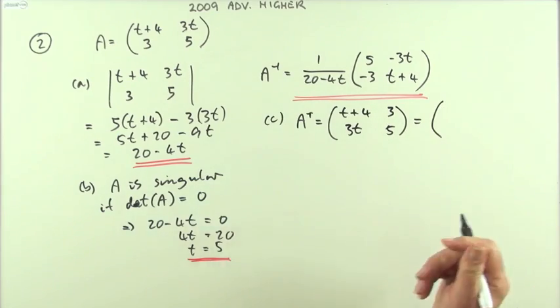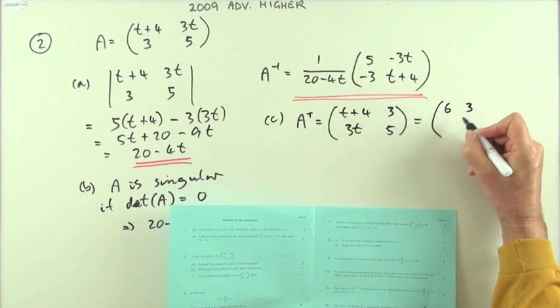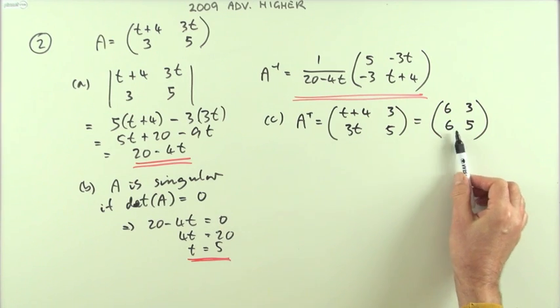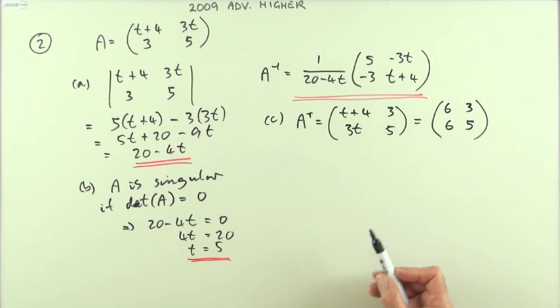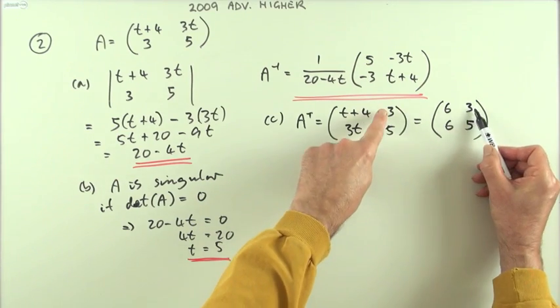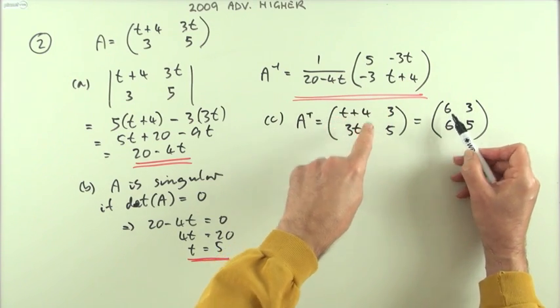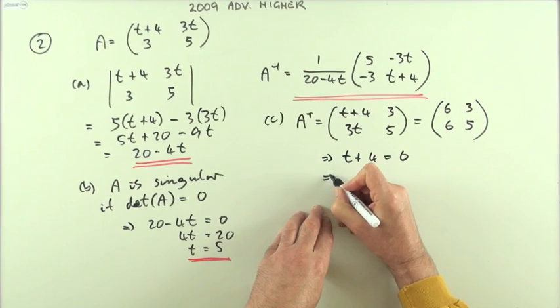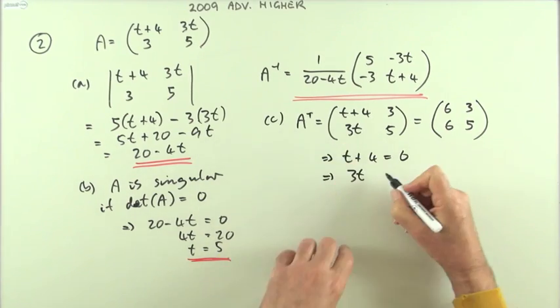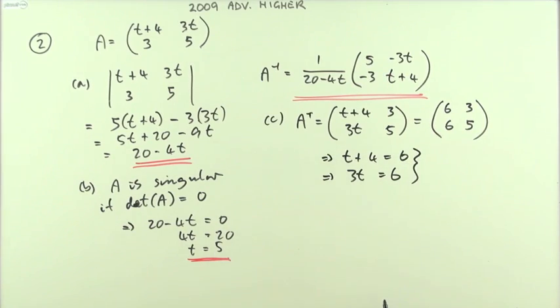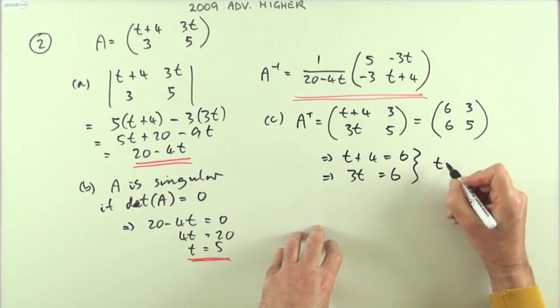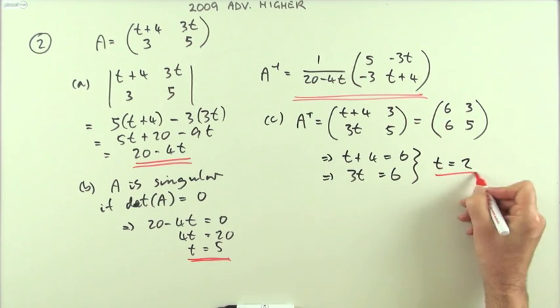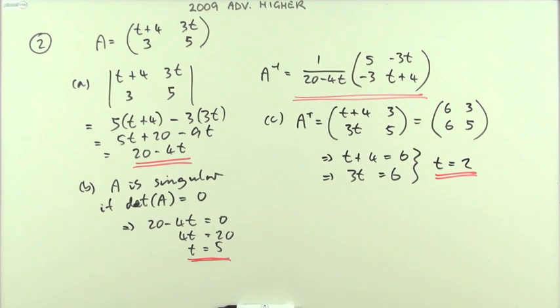And that had to equal (6, 3; 6, 5). If two matrices are the same, their corresponding entries must be the same, and that's certainly the case for these two: 3, 3, 5, 5. Which means that t plus 4 should equal 6, and also 3t should equal 6. Those would have to be consistent, and they are consistent because in both of those cases t would equal 2. So the solution to that is t equals 2, and that's all there was.